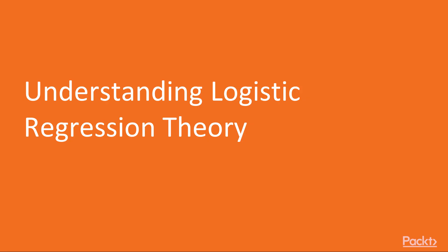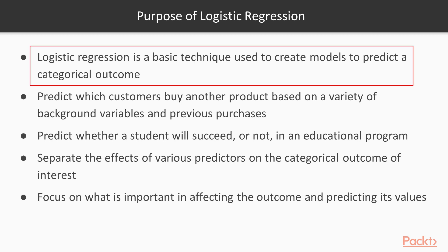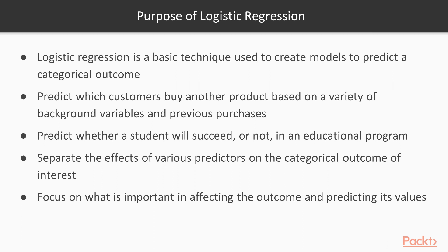In this video, we're going to focus on understanding logistic regression's theory. In general, the purpose of logistic regression is that it is a basic technique used to create models to predict a categorical outcome. Whereas in the previous section we talked about linear regression, which allowed us to predict a continuous outcome, logistic regression is actually very similar but it's going to allow us to predict a categorical outcome instead of a continuous outcome.